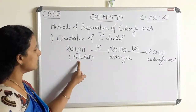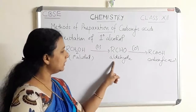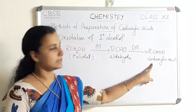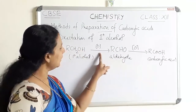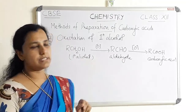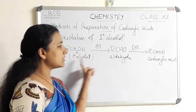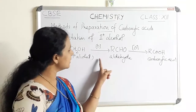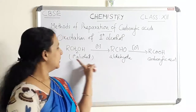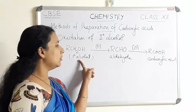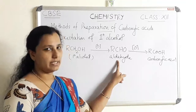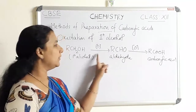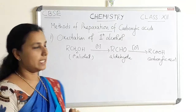Primary alcohols on oxidation give aldehyde, and further oxidation gives carboxylic acids. If we are using a strong oxidizing agent, the primary alcohol is converted to carboxylic acid. If we are using a mild oxidizing agent, primary alcohol is converted to aldehyde, and the reaction stops at that stage.